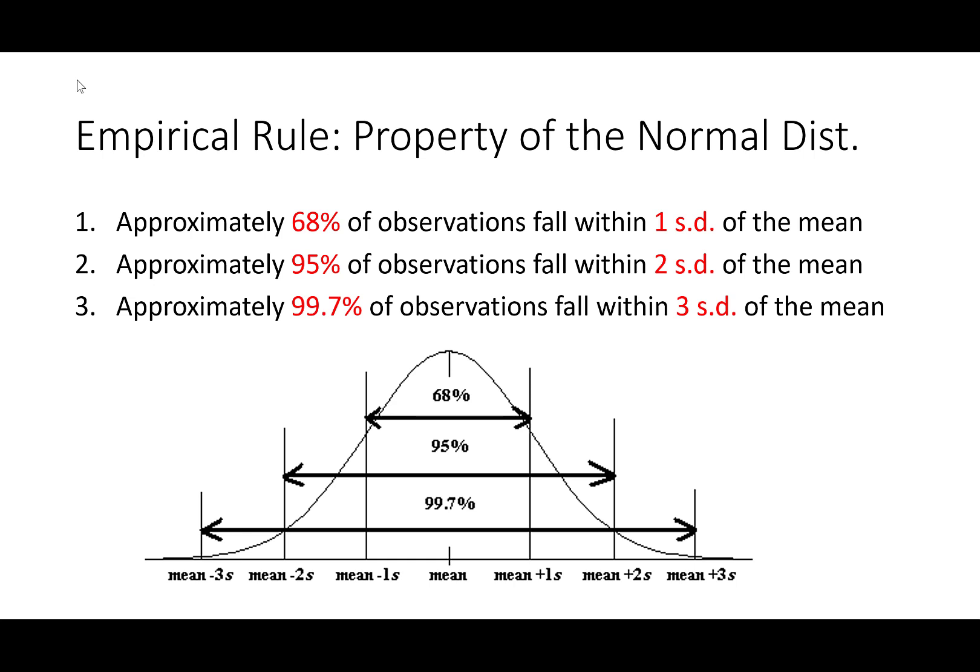Roughly 68% of observations fall within one standard deviation from your mean. If you go two standard deviations away from your mean, roughly 95% of observations fall within there. And if you go three standard deviations away from your mean, approximately 99.7% of observations fall within three standard deviations. This only holds true for approximately normal or normally distributed data — if you don't have that, these probabilities will not hold.